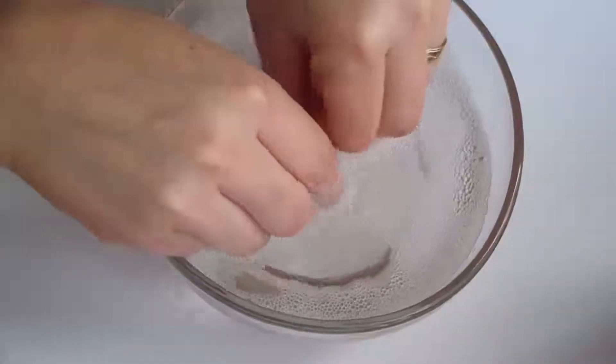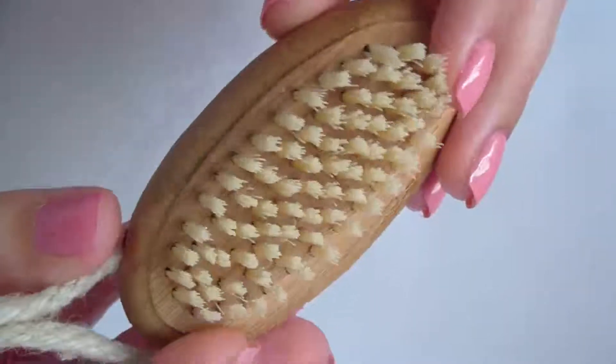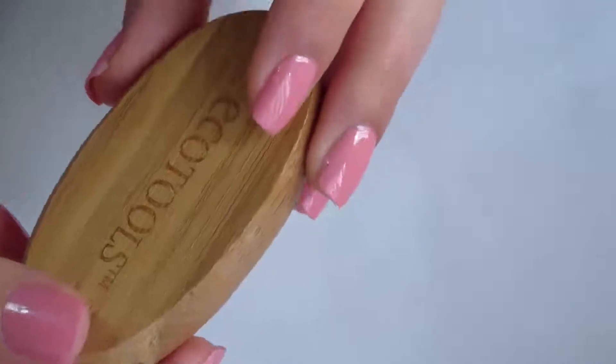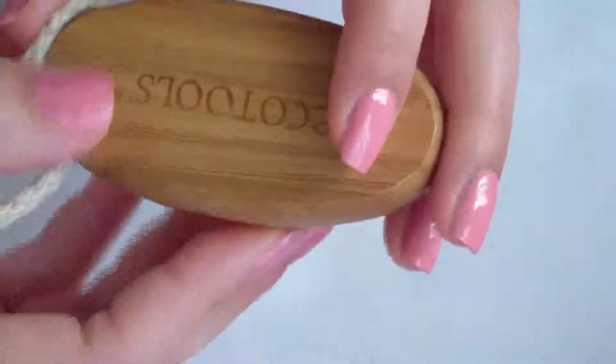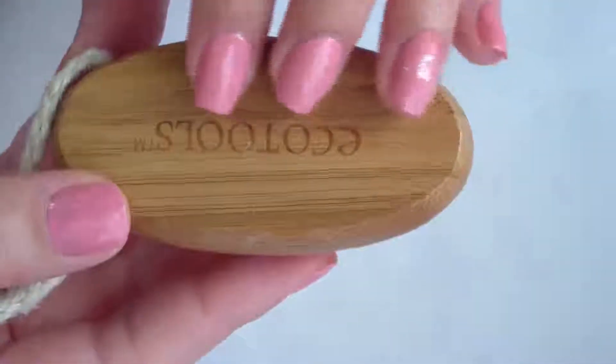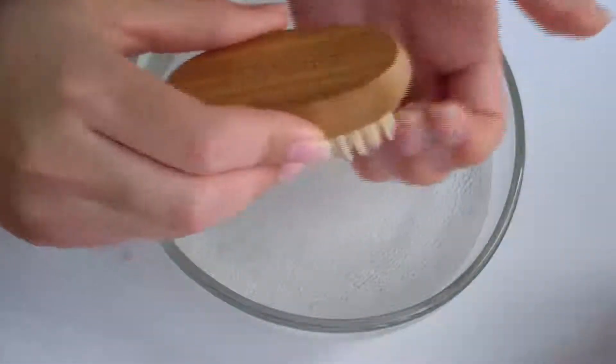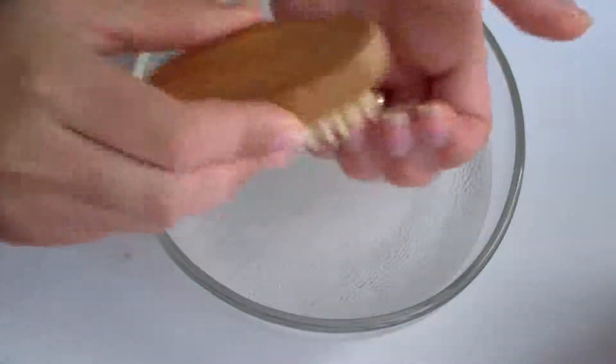To clean the inside of your nails you can grab a brush like the one you see here. This one is from Echo Tools. You can also use like an old toothbrush. Scrub your nails very well with a brush to remove any dirt.